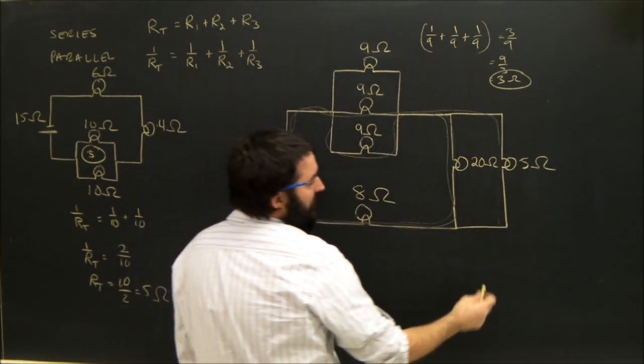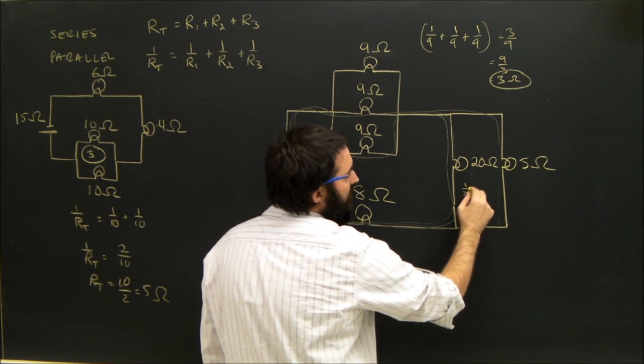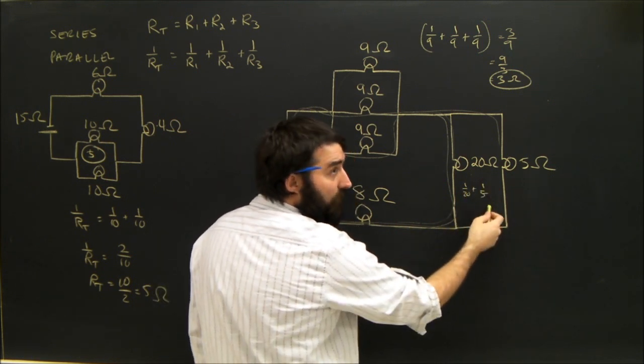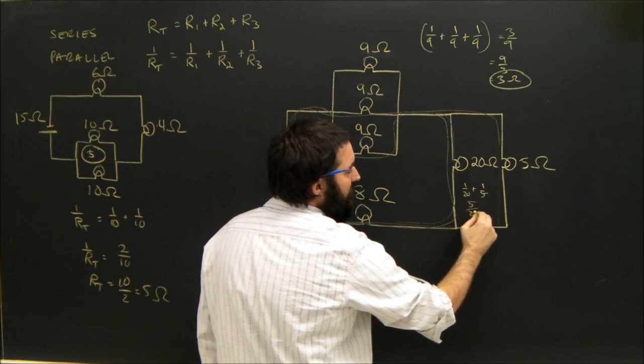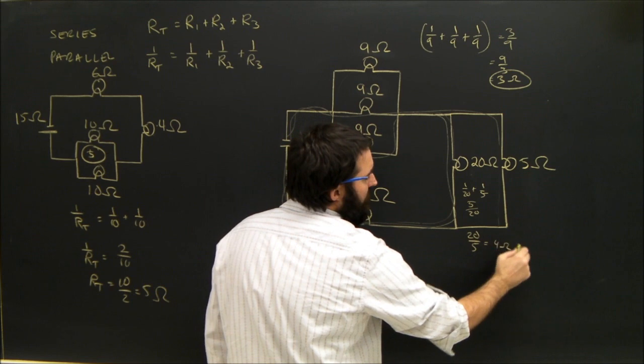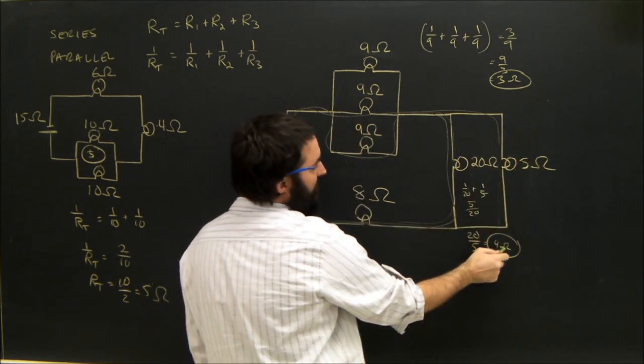The 20 and 5 are also in parallel. So 1 over 20 plus 1 over 5. Well, that's 1 over 20 plus 4 over 20. That's 5 over 20. Flip that guy over. It's 20 over 5, which equals 4 ohms. So this whole branch has an equivalent resistance of 4.